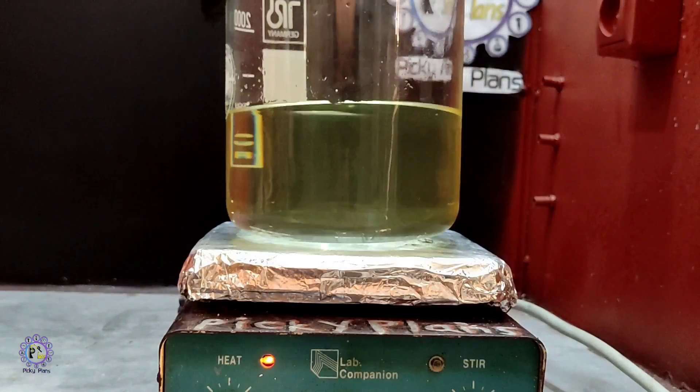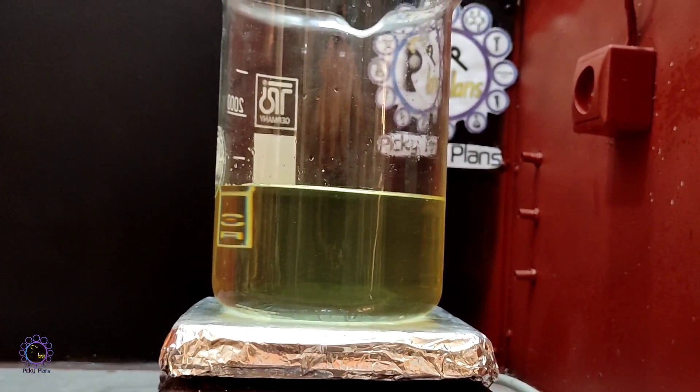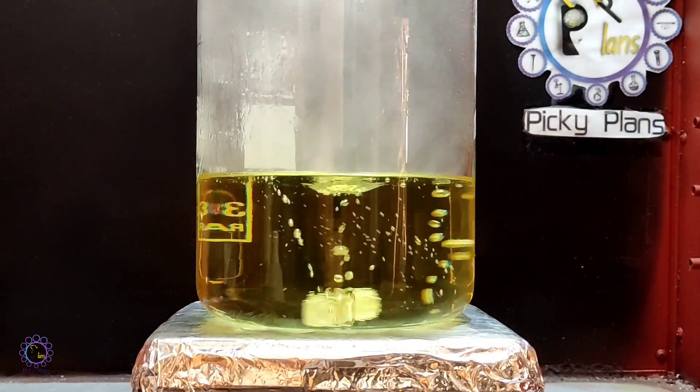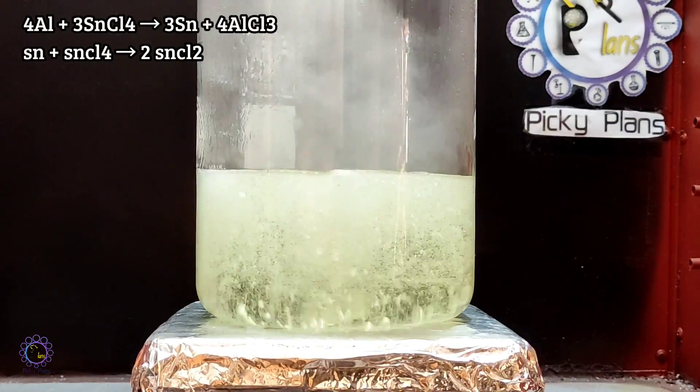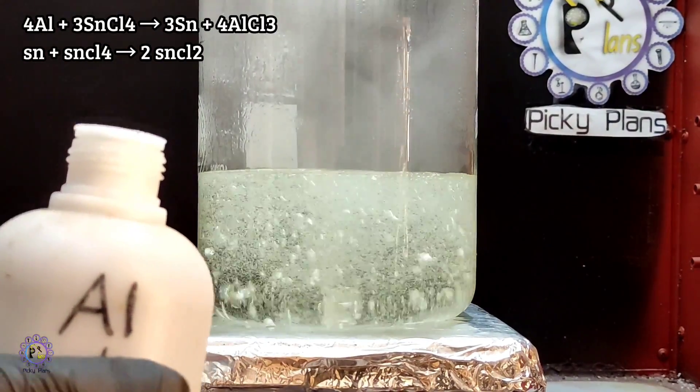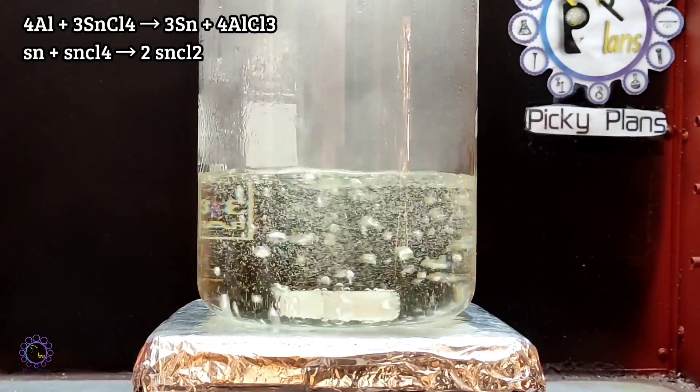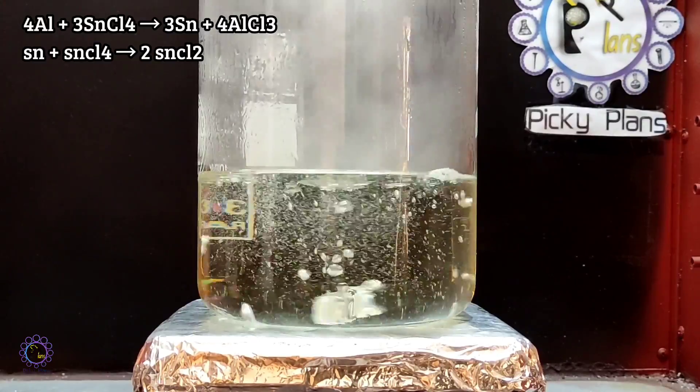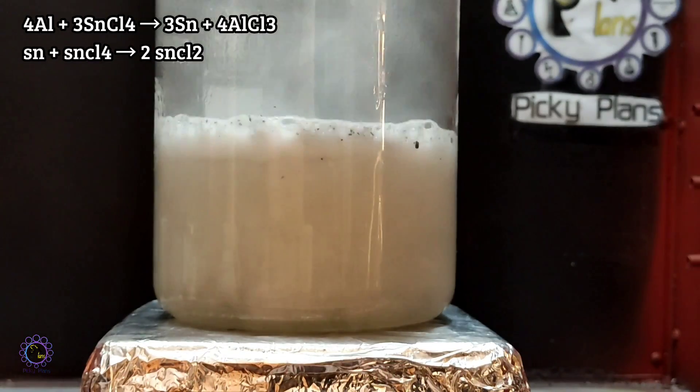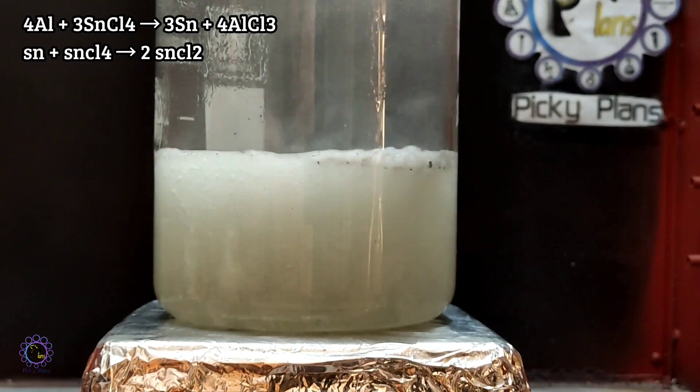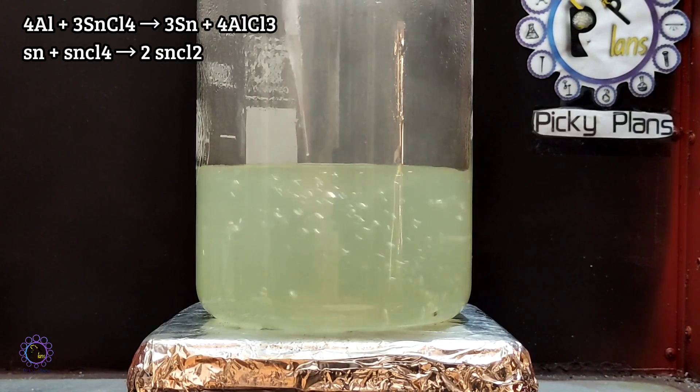Tin metal solution placed on the hot plate to evaporate excess water a bit. To fix solution yellow color and reduce stannic ion back to stannous, some aluminum powder added to the solution. This is the equation that aluminum involves in the reaction in order to reduce stannic ion to stannous. First, aluminum reacts with stannic ion and converts it to metallic tin. Afterwards, tin metal reacts with excess stannic ion in the solution and reduces it back to stannous ion.